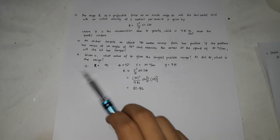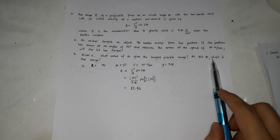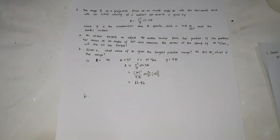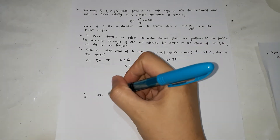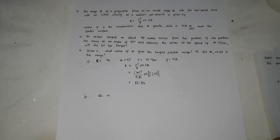For letter B: what value of θ gives the largest possible range? We need to find the θ that maximizes R = V²/G · sin(2θ). Looking at the graph of sine, we identify the value that gives the maximum.